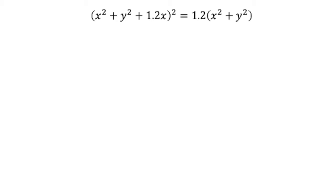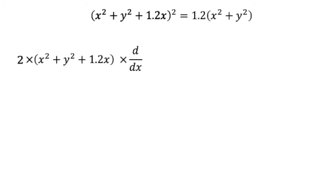The main challenge here is to compute the derivative. Let's start by working with the left-hand side of the equation. This is a composition of two functions. The outer function is x squared, and the argument, or the inner function, is x squared plus y squared plus 1.2x. So we can use the chain rule, which tells us to take the derivative of the outer function, then plug in the argument, and multiply by the derivative of the argument. The derivative of x squared is 2x, so we just multiply by the argument, x squared plus y squared plus 1.2x, and then multiply the derivative of the argument.